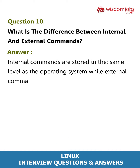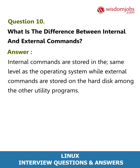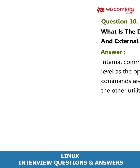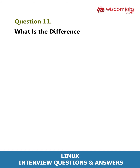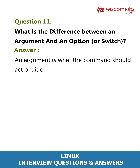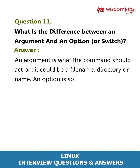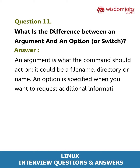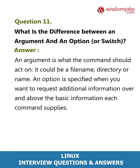Question 11: What is the difference between an argument and an option or switch? Answer: An argument is what the command should act on — it could be a file name, directory, or name. An option is specified when you want to request additional information over and above the basic information each command supplies.